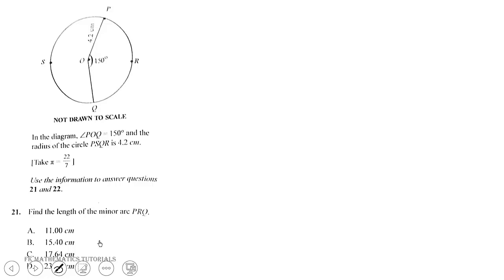West African Secondary School Certificate Examination 2022 June Mathematics Paper 1 — we are solving the WASSCE 2022 June General Mathematics Core Mathematics Paper 1. We are finding the length of the minor arc.